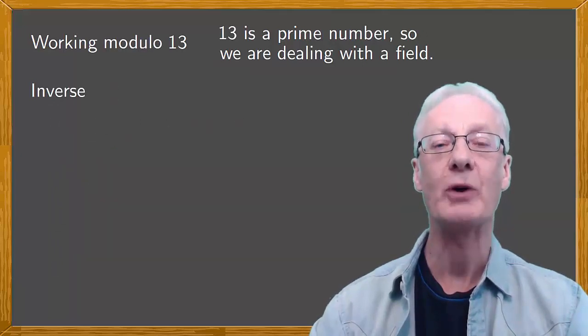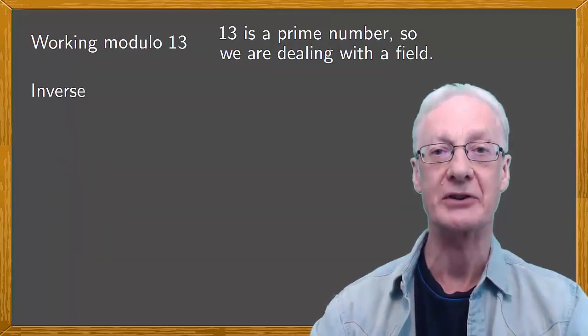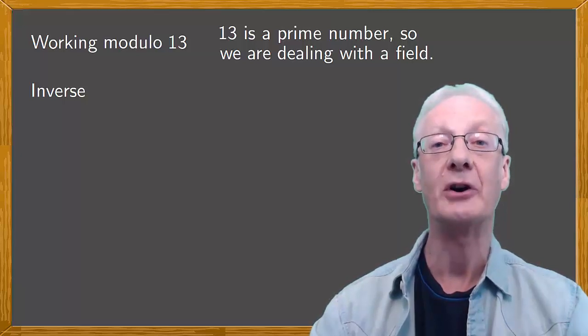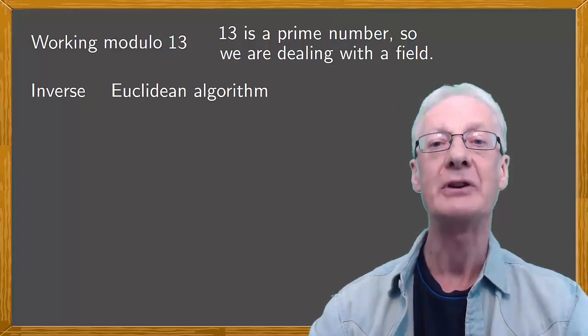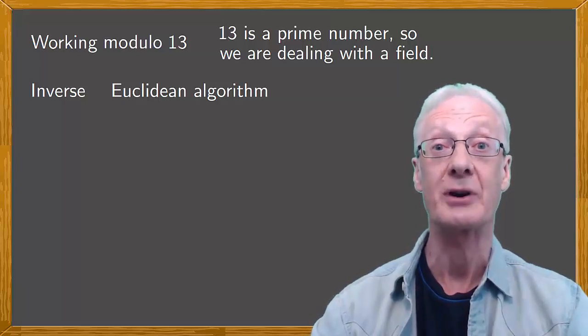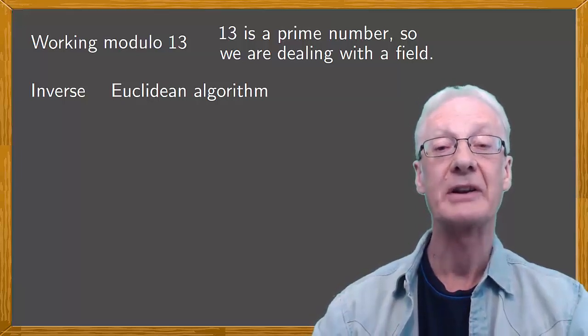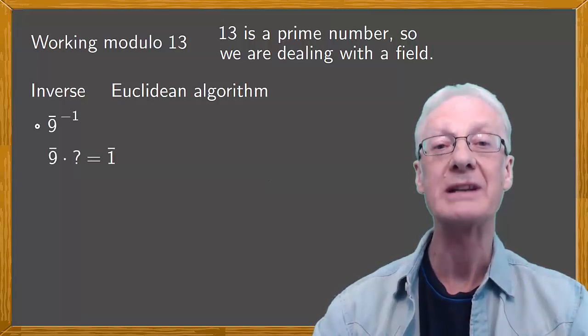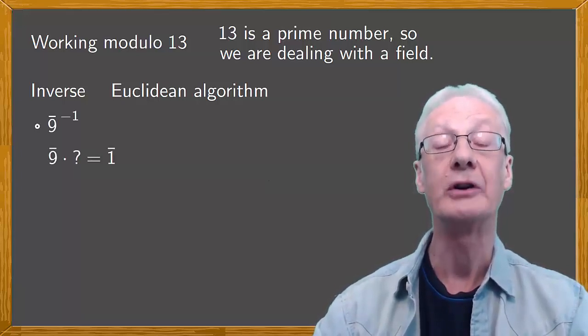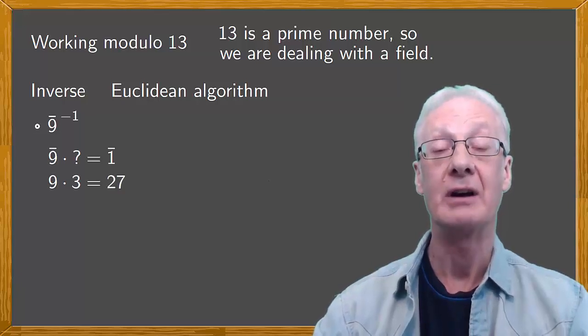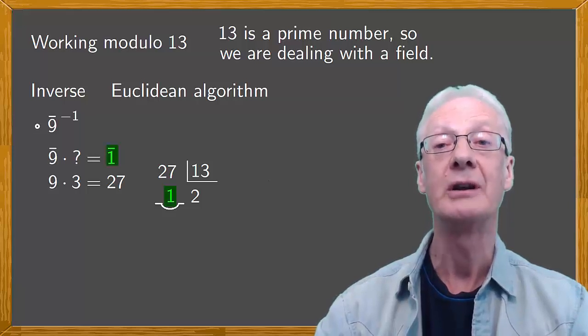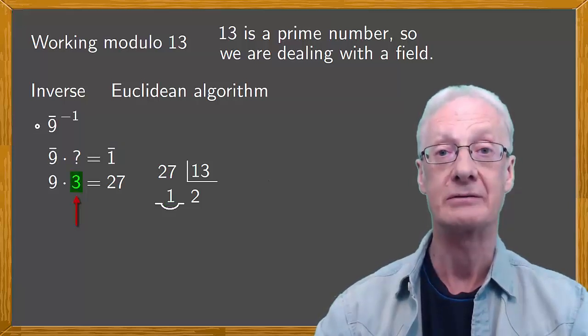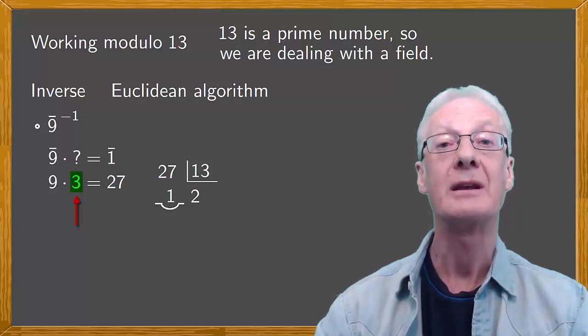There's also a step-by-step way to arrive at the inverse of a number. It uses a well-known method of division called the Euclidean algorithm. If we're dealing with a prime number that isn't very large, we can also get the inverse by a simple process of trial and error. For example, in the case of 9, we'll look for a number such that when it's multiplied by 9, the result is 1 modulo 13. For instance, 9 times 3 is 27, which divided by 13 gives a remainder of 1. So the inverse of 9, shown as 9 to the minus 1, is 3.